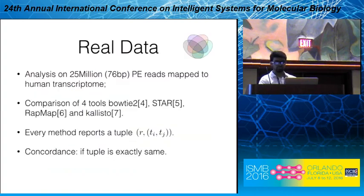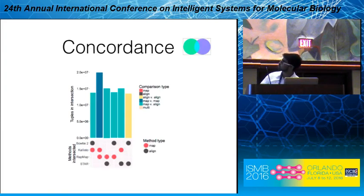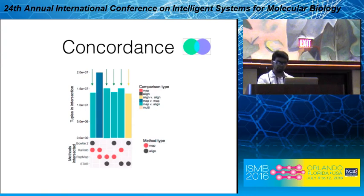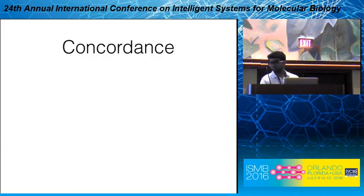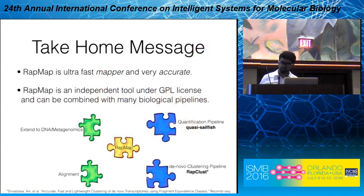For real data, we don't know the ground truth, so we can only check concordance between tools. We defined concordance using the tuple of read and set of transcripts mapped — two tools are concordant if this tuple is exactly the same. Here I'm showing a two-by-two comparison of tools: the x-axis represents the two compared methods. The yellow region shows comparison of two aligners; the green region shows comparison of a mapper and aligner. Importantly, aligner-mapper comparison is almost as similar as comparison of two aligners.